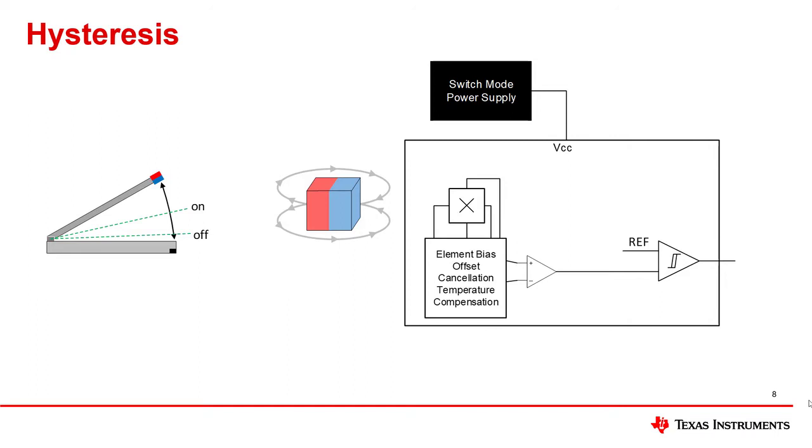Hysteresis helps eliminate sporadic state changes that would be caused by fluctuations in the supply, electrical noise, magnetic noise, and mechanical vibration.